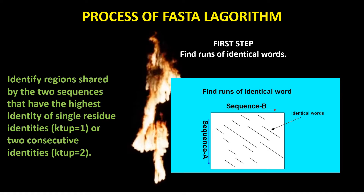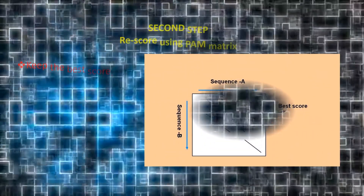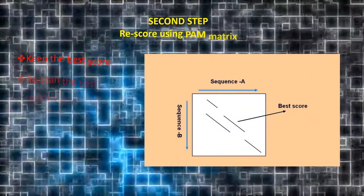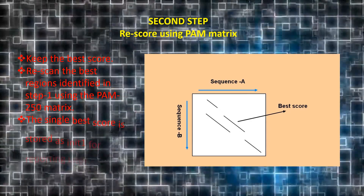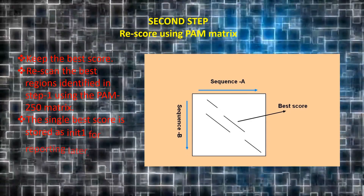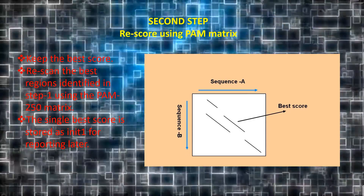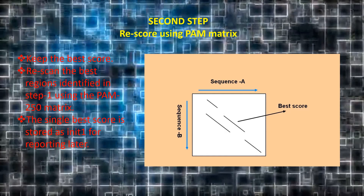The words of two sequences are aligned as single residues. The second step is to rescore using the PAM matrix. It keeps the best score. It re-scans the best regions identified in step 1 using the Percentage Accepted Mutation, or PAM 250 matrix. The single best score is stored as init1 for reporting later. Observe the diagram which shows the best score aligned.